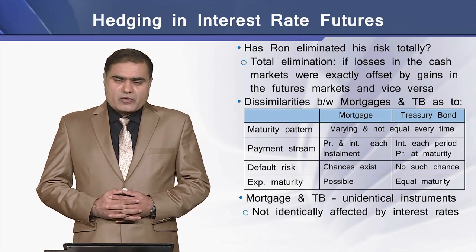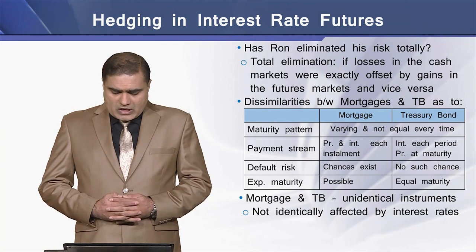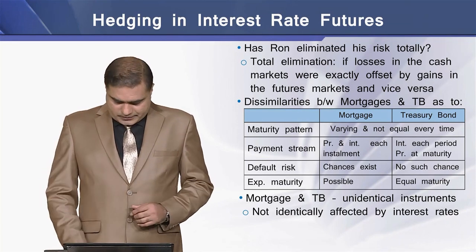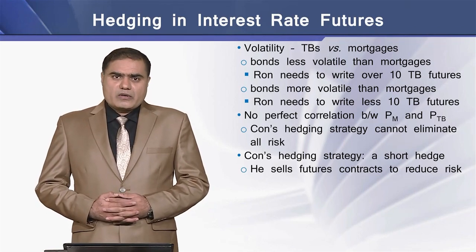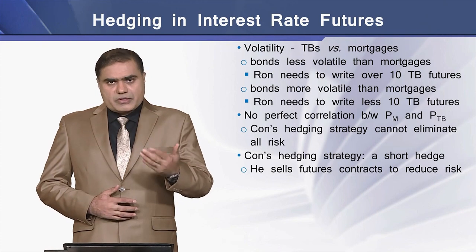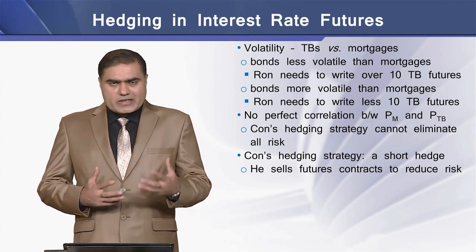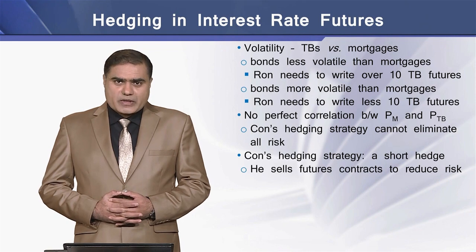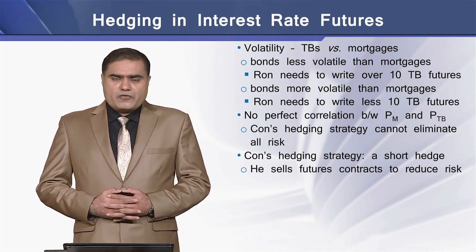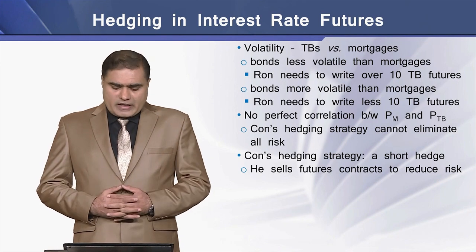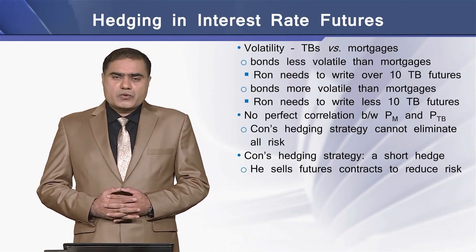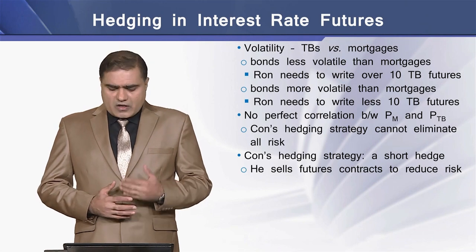Mortgage loans and Treasury Bonds are not identical instruments and are not identically affected by interest rate movements. Regarding volatility, bonds are less volatile than mortgages, so the mortgage loans would need to write more than 10 Treasury Bond futures contracts. If bonds are more volatile than the mortgage, then the mortgage loans need to write fewer Treasury Bond futures contracts.